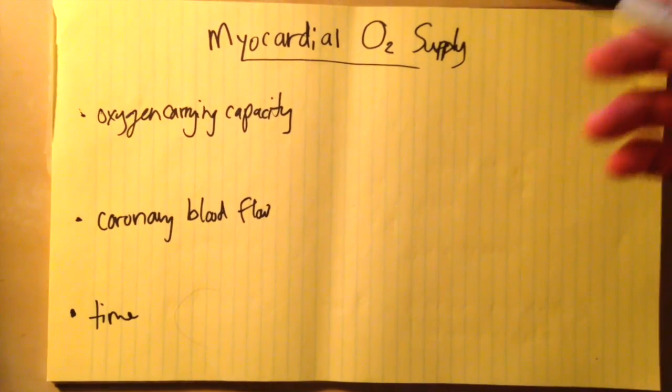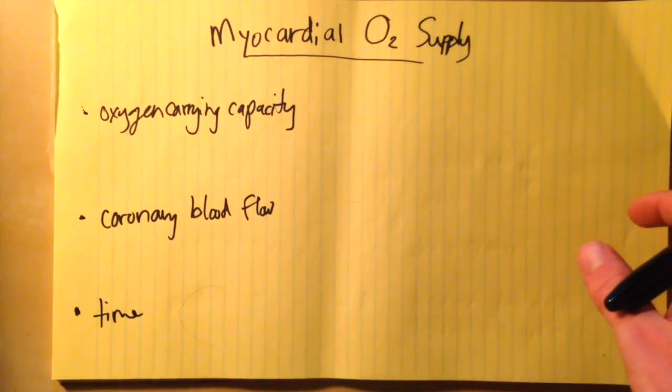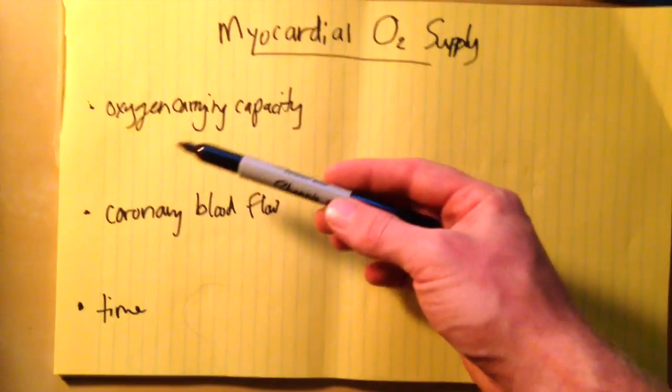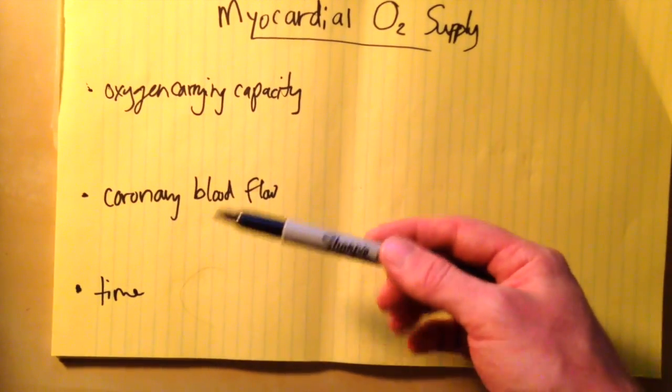Tonight we're going to talk about supply. There'll be another video about myocardial oxygen demand later. What are the main factors? There are three broad categories to think about.